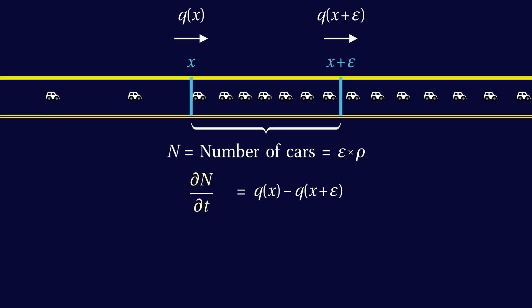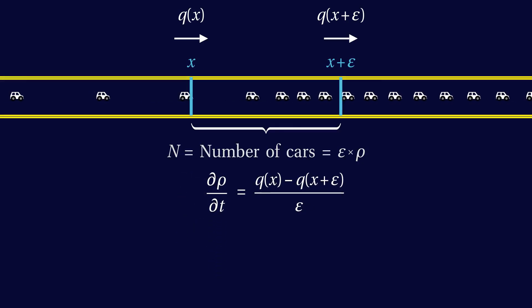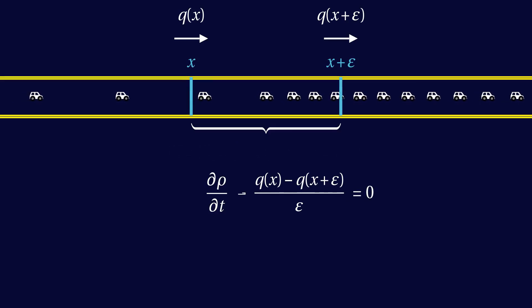On the left hand side, we can plug in the formula for the number of cars. Now let's divide by epsilon and bring everything over to the left hand side. Letting epsilon tend to zero, we recognize the derivative of q with respect to x. So we find that the time derivative of rho plus the space derivative of q equals zero.